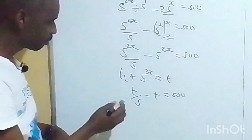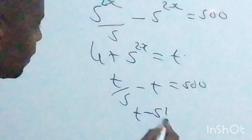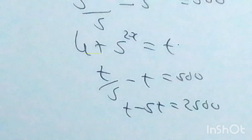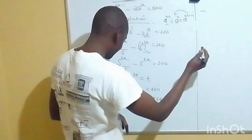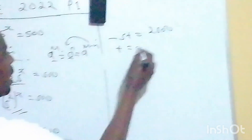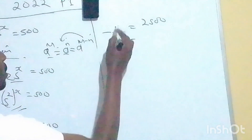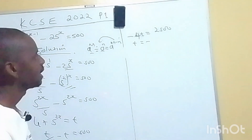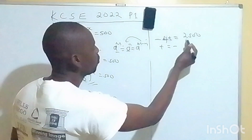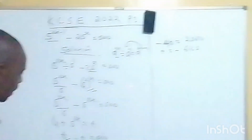Now we multiply both sides by 5. That gives us t minus 5t is equal to 2500. t minus 5t gives us negative 4t, equal to 2500. Dividing both sides by negative 4, we get t is equal to negative 625.